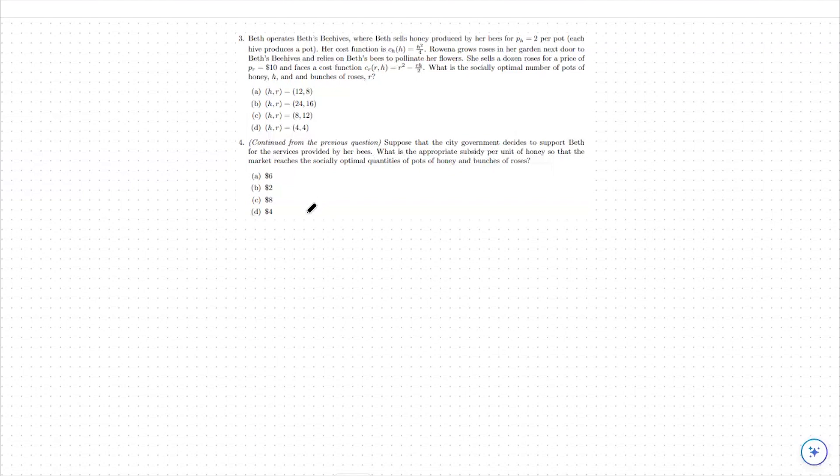With this question, first, we need to instead look at our private cost to producing honeypots instead of our public or social cost that we were looking at before. Our private cost to production of honeypots will just be the h squared over 4 value from above here. We're not going to factor in the benefit received from rose producers from the amount of honeypots being produced. That's our private cost associated with honeypot production.